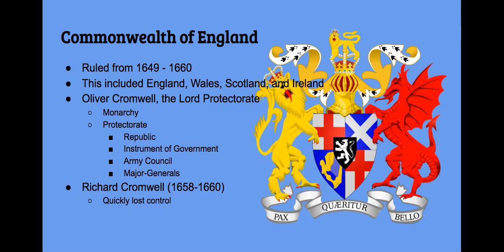They had an army council and most of their political leaders were major generals — both very militaristic terms. When Oliver died in 1658, his son Richard Cromwell took over. His reign was very brief because he was not a military leader — he never fought in a military. So the army council and the major generals started trying to take over instead of allowing Richard to be in control, and that just fell apart. After that, the Commonwealth of England completely disintegrated, and that was when the Restoration of Charles II took place.